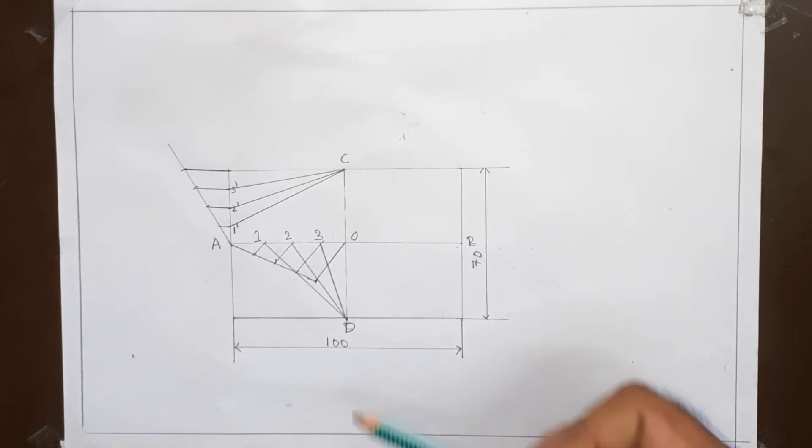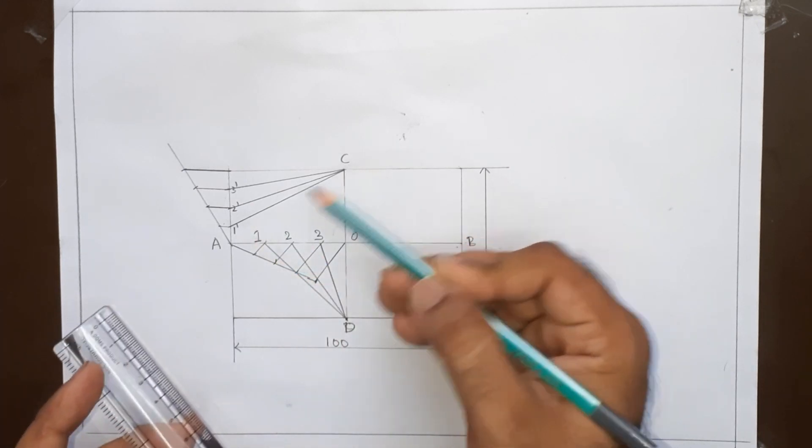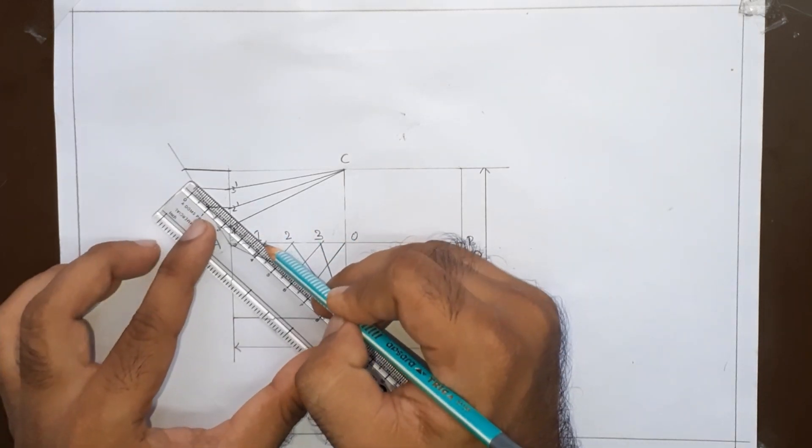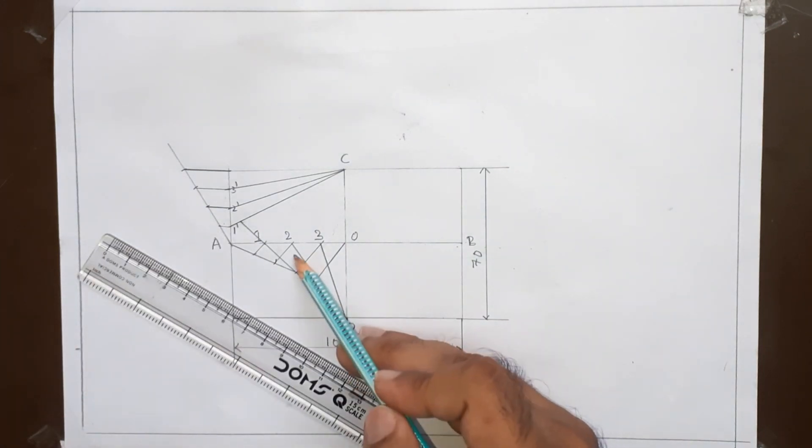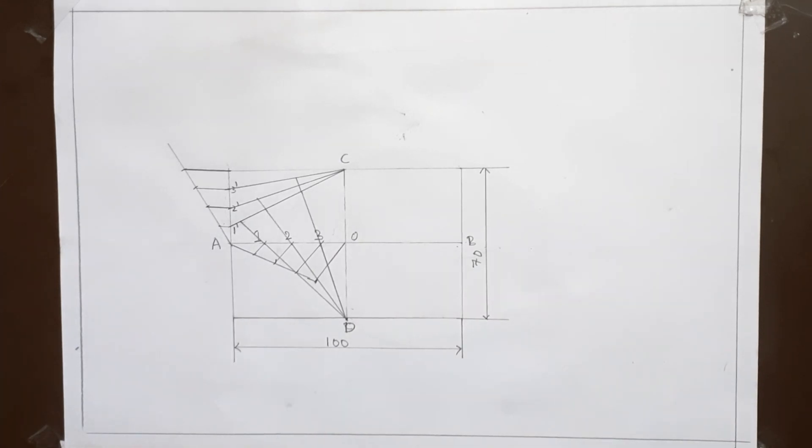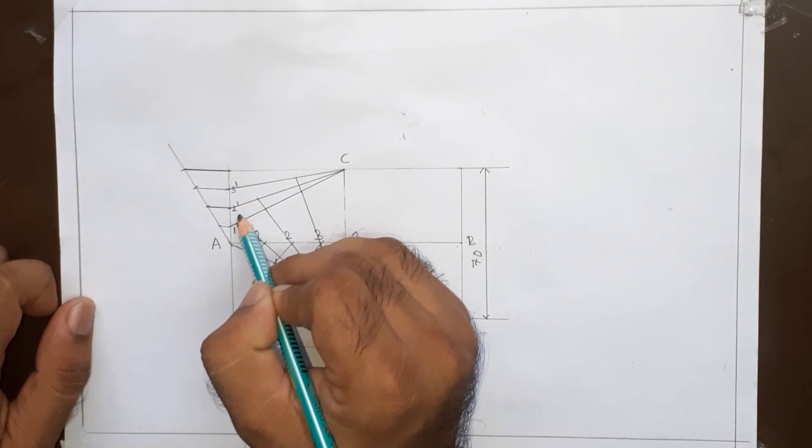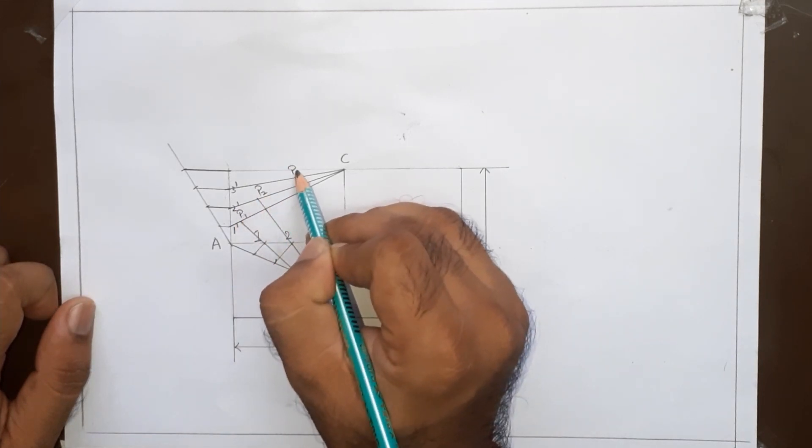Now extend the D1 line to meet the line of C1 dash. Similarly, extend D2, D3 and now we have got 3 points. Let's name this as P1, P2 and P3.